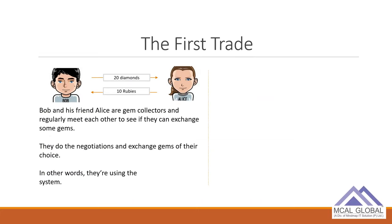To understand why we need blockchain, let's look at history. Some 100 to 1000 years ago, how did trade take place? Suppose Bob has diamonds and Alice has rubies — they're gem collectors who meet at conferences and exchange gems through negotiation. This was the barter trade system, and while it worked for simple exchanges, there were several significant problems with it.